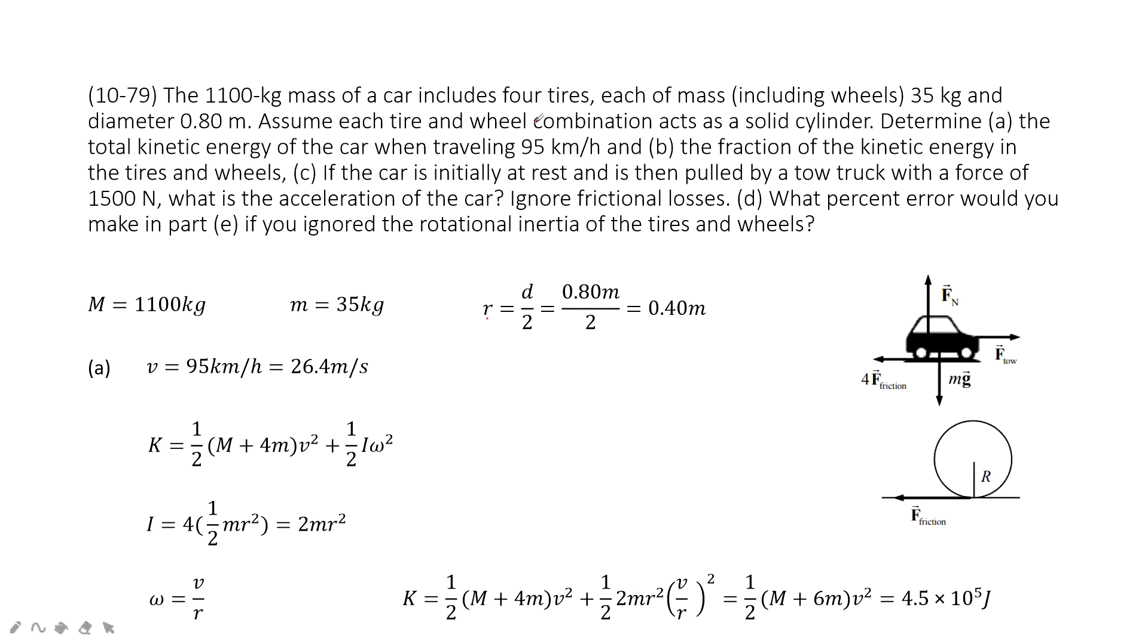First one, we consider the total kinetic energy of the car when it travels at 95 km per hour. So you must convert the unit km per hour to meter per second. The kinetic energy should include two parts, the linear kinetic energy and the rotational kinetic energy. The car has mass for the car plus four tires, M plus 4m, times v squared.